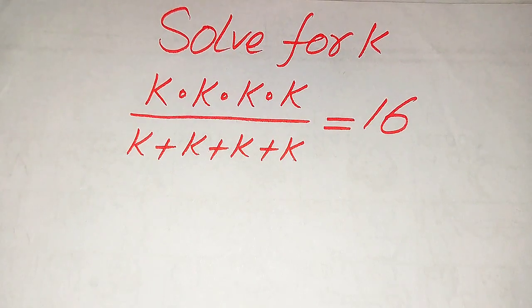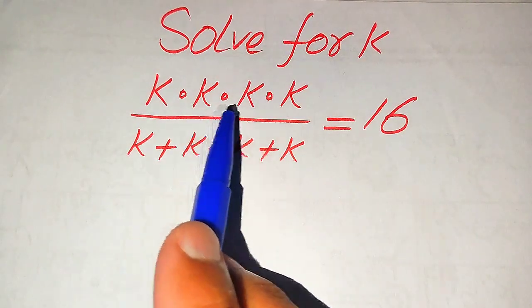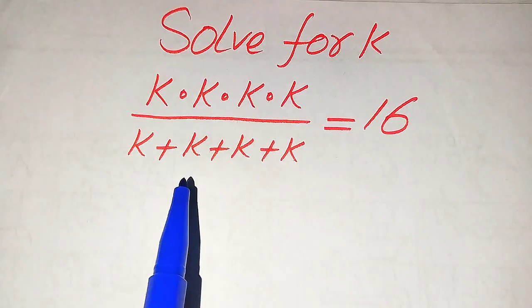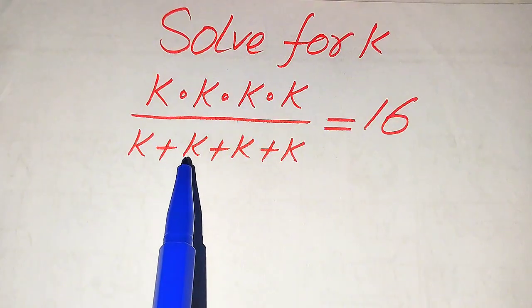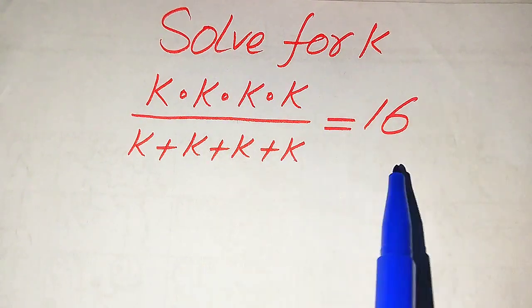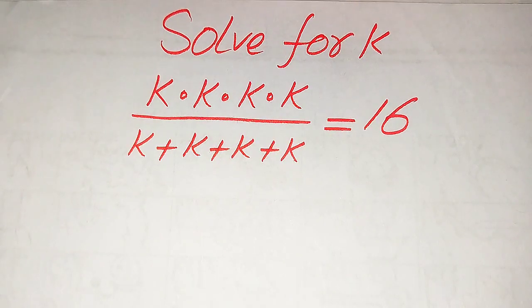Hello everyone. How to solve this problem for the values of k: if we have k multiplied by k multiplied by k multiplied by k, divided by k plus k plus k plus k, is equal to 16. We solve this problem for all the values of k, so here we need to find all the roots of this equation.